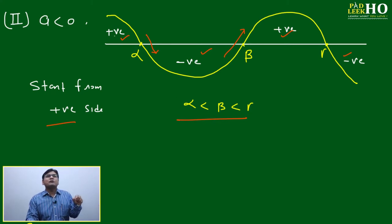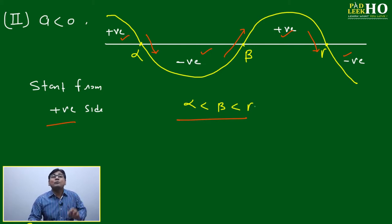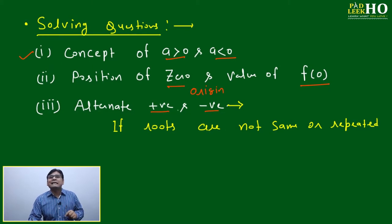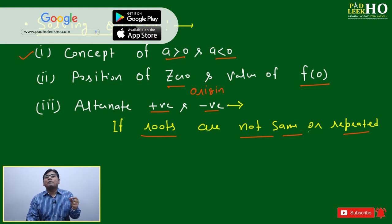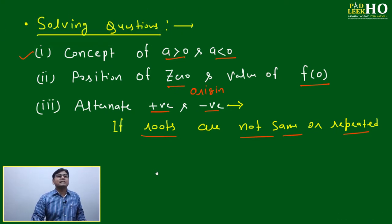Whenever the graph crosses a root, the sign changes — positive to negative, negative to positive, alternately. But when will this NOT happen? When roots are repeated. If a root is repeated and its power is an even number, then the sign will NOT change at that root. It will follow the same sign on both sides. We'll take an example to make this crystal clear.